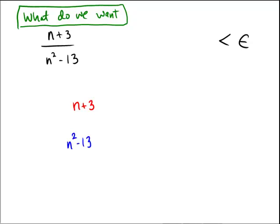So what do we really want? We want n plus 3 over n squared minus 13. We wish for this to be less than epsilon. Now you could attempt to try to do this algebraically, but it's probably going to be a little bit messy. So let's see if we can make some abbreviations and shortcuts and other bounds to make this a little easier on ourselves.